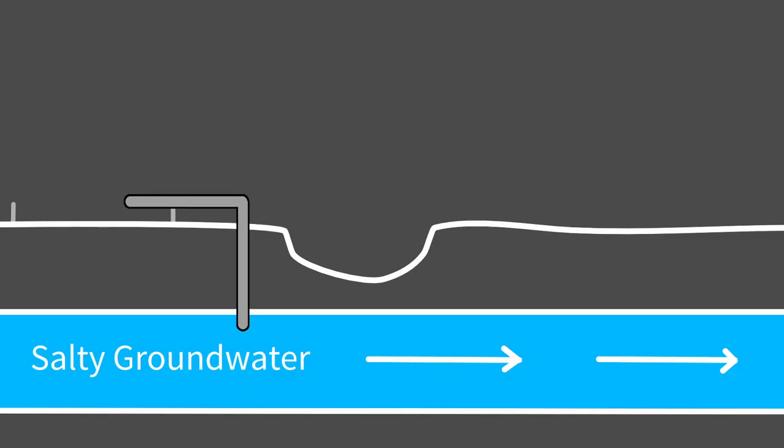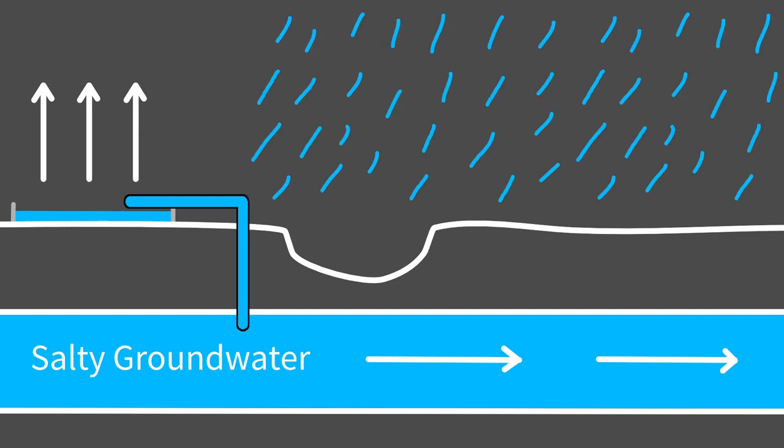Another method of reducing salt in the water is salt interception schemes, where salty water is pumped up from the groundwater layer and sent to shallow ponds where the water is evaporated off and later rains down on the river as fresh water. The salt can then be sent off for other uses.